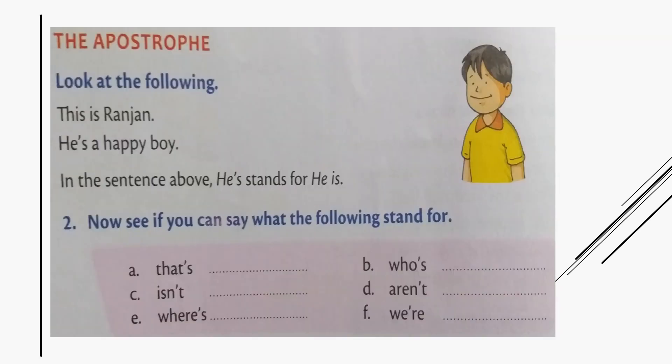Now you have the apostrophe. You have to learn about the apostrophe. For example, let us look at the following. This is Ranjan. The name of this boy is Ranjan. Now here you can see we are saying 'He's a happy boy'. Can you notice here what you have used? Here on top, it is called the apostrophe.